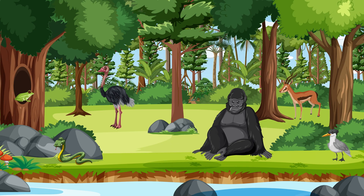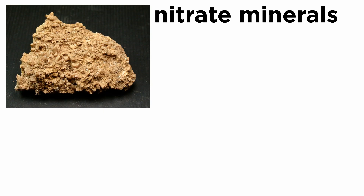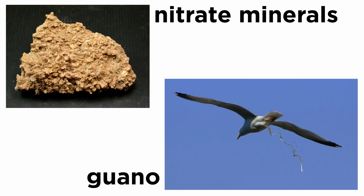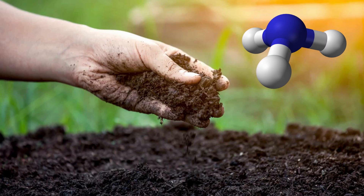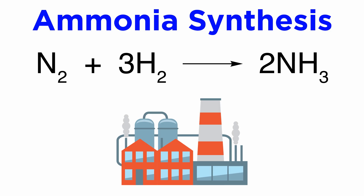Ammonia is excreted as urea or uric acid in higher animals, because ammonia is too toxic to be tolerated in appreciable concentrations in vivo. Due to its toxicity, there are no bulk sources of ammonia in the animal world. Sources of nitrogen include nitrate minerals and guano, the excrement of seabirds and bats. Yet ammonia, which is used to make fertilizers, is needed in huge amounts to sustain modern agricultural production. Therefore, an industrial process to convert nitrogen gas into ammonia has always been a target.